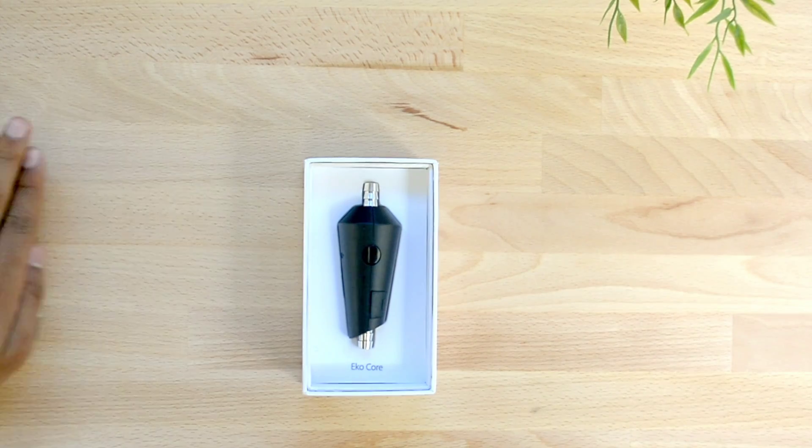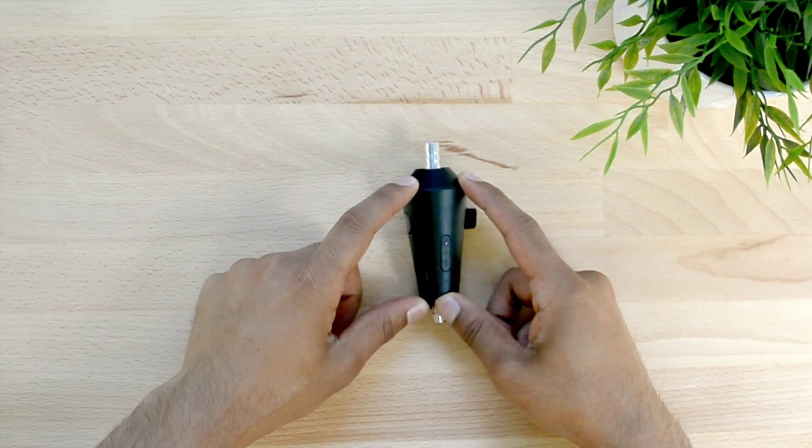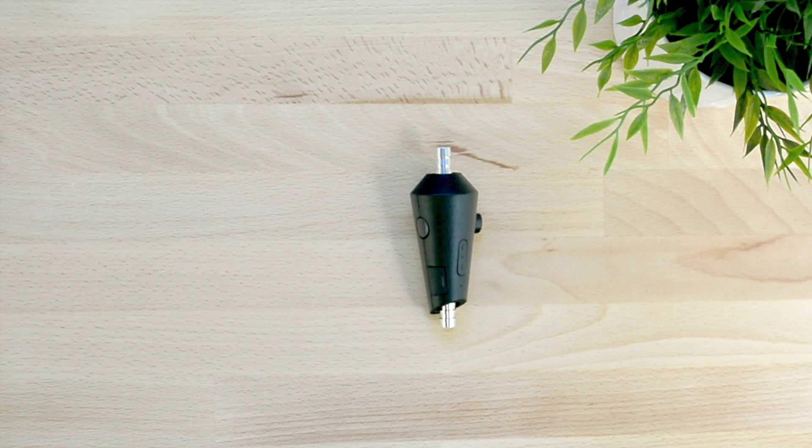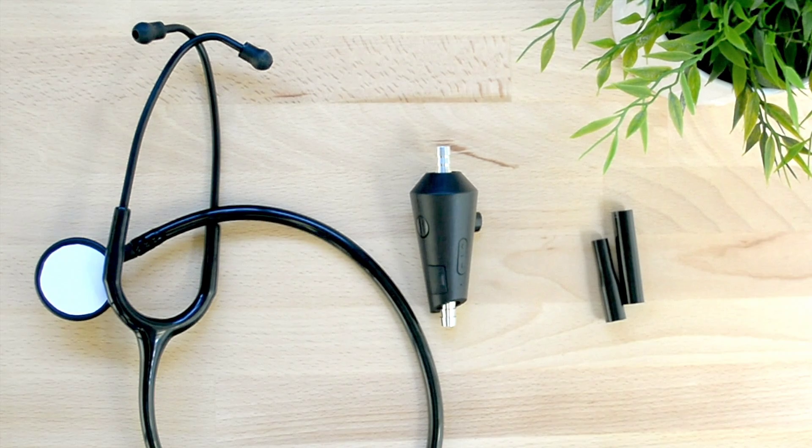Now let's connect your ECHO-Core attachment to an analog stethoscope. We will start by attaching the ECHO-Core to a small tube stethoscope and then show you how it connects to a large tube stethoscope. We have included a large and small adapter to fit stethoscopes of any tubing size.